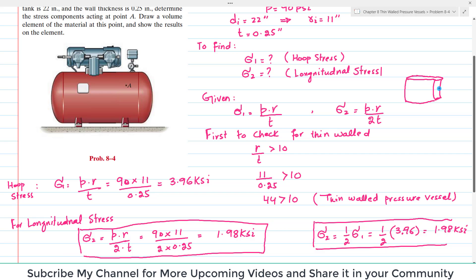Your longitudinal stress will be in this direction, that is equal to sigma 2, and your hoop stress will be in this direction. This is sigma 1, and sigma 1 equals 3.96 KSI while sigma 2 equals 1.98 KSI. So this was the representation of volume element of material at point A, and the results are also shown.